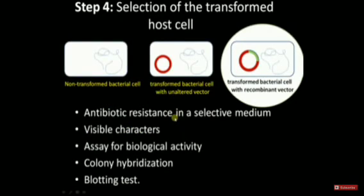After transformation, we will get three types of colonies: non-transformed bacterial cells without any change, transformed bacterial cells with an unaltered vector, and transformed bacterial cells with the recombinant vector. This last type is the colony we need to select. Selection can be done by growing them in an antibiotic-resistant medium, by visible characters, by adding a substrate that changes color in some colonies, by colony hybridization, or by blotting test.